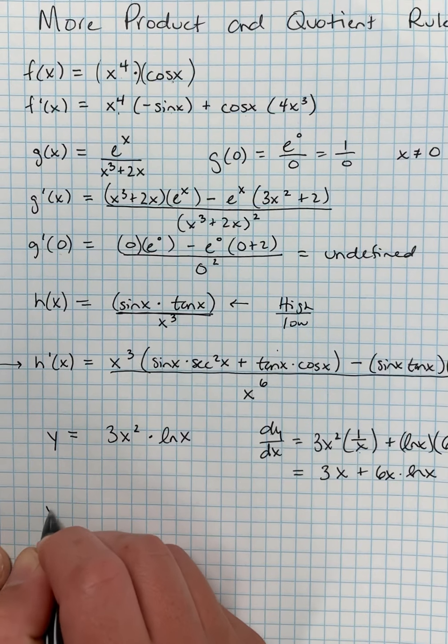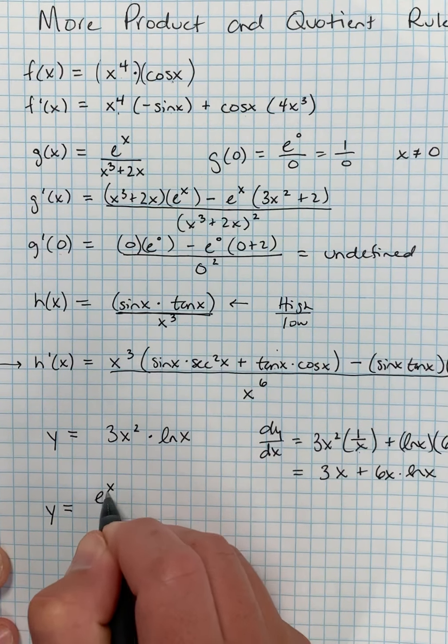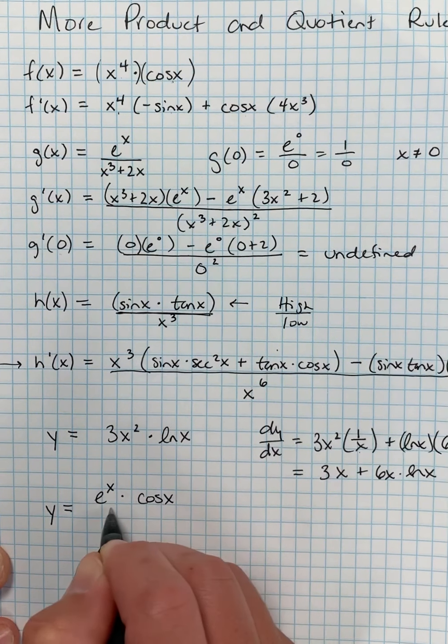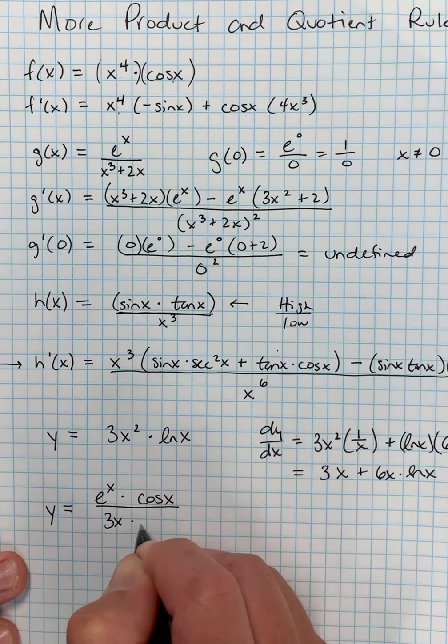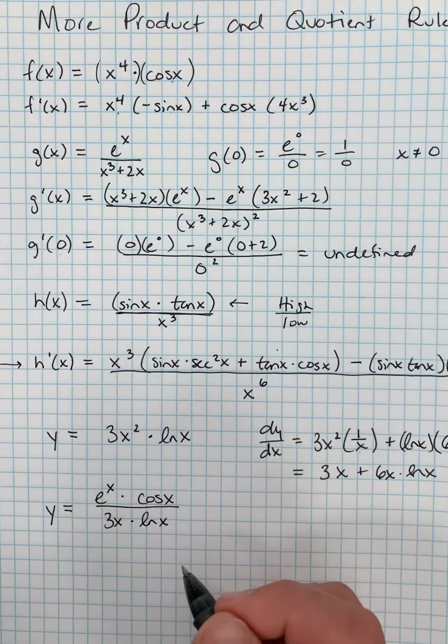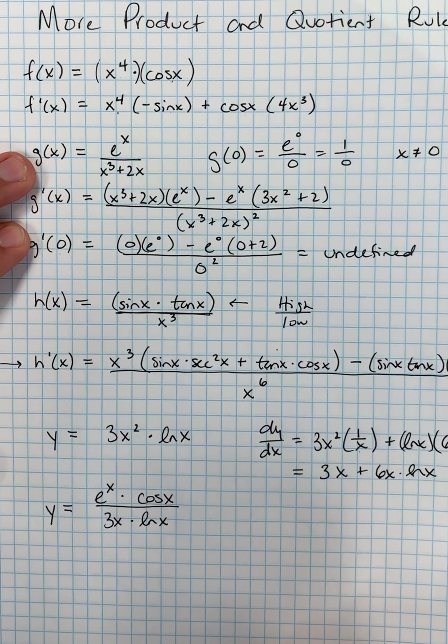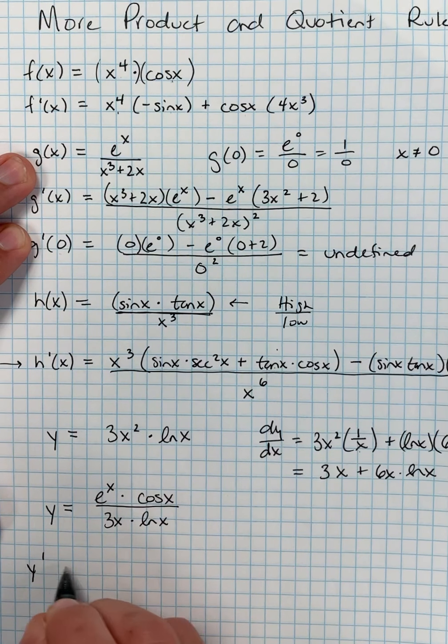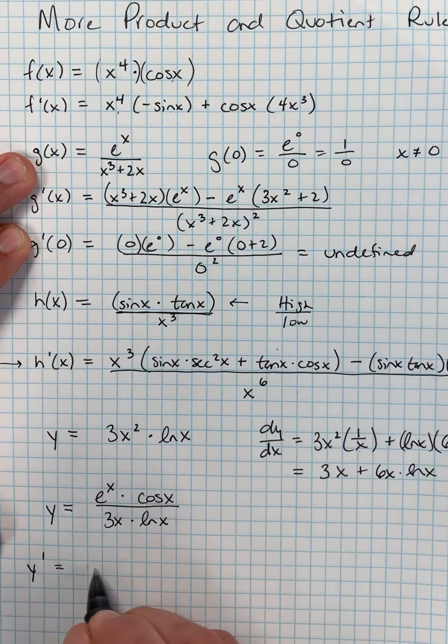Let's see. What if I have something that says y equals, and maybe we'll combine e to the x times cosine x over 3x times ln(x)? So this is kind of a bear because it's two product rules within a quotient rule. We'll attack this one.